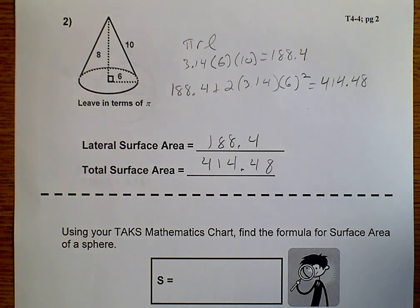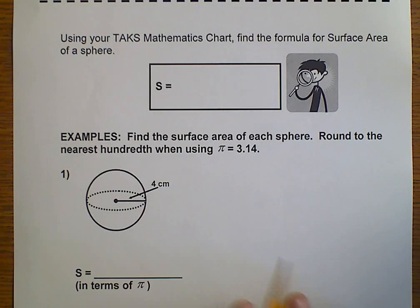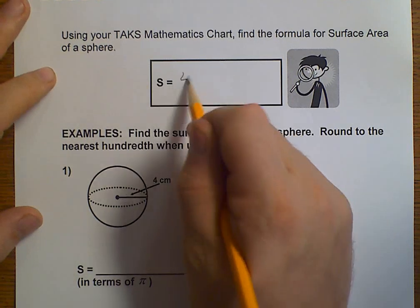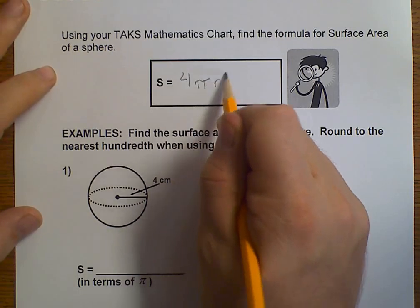So, that is for a cone. Now we're going to be talking about a sphere. Well, there is no lateral and total for a sphere because there is no base to a sphere. It's just all one surface. And that formula would be 4 pi r squared.